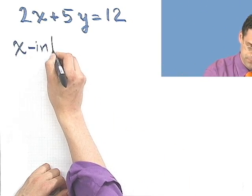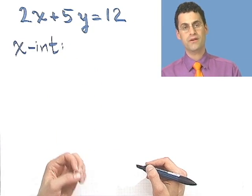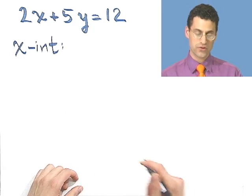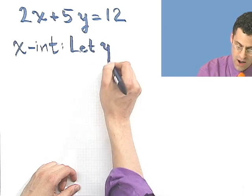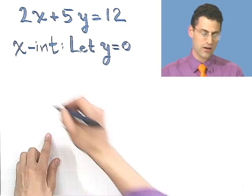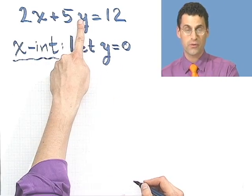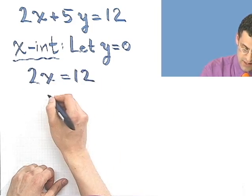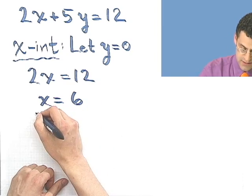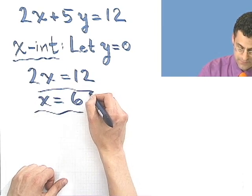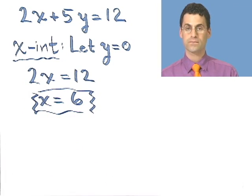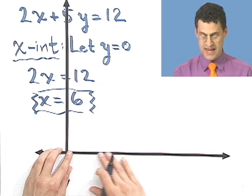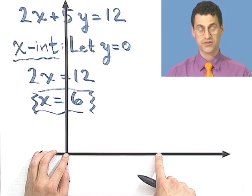Let's find the x-intercepts first. To find where this crosses the x-axis, I let y equal 0. If I put 0 in for y, I see 2x plus 0 equals 12, and so x equals 6. So this graph is going to cross the x-axis at a value of 6.